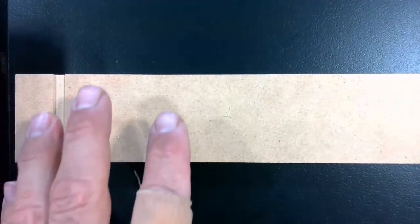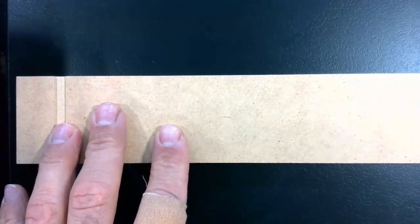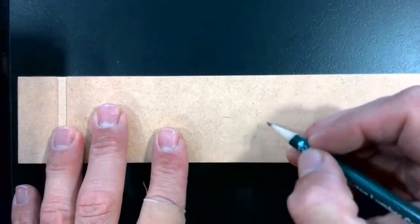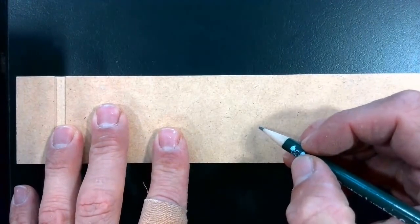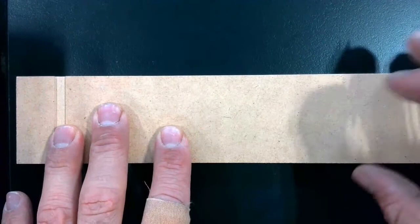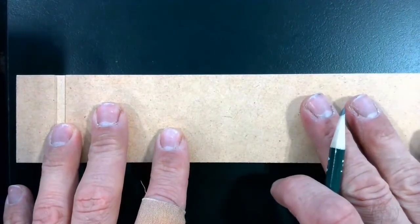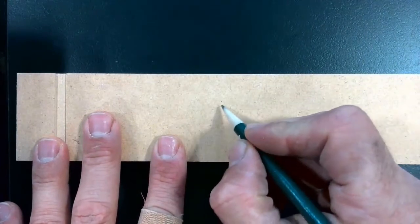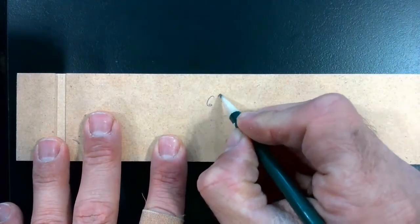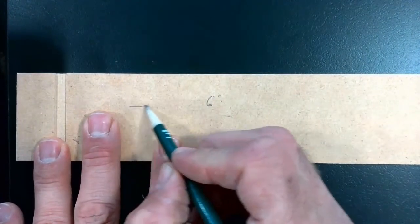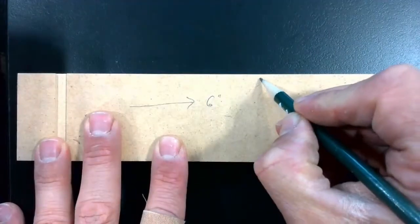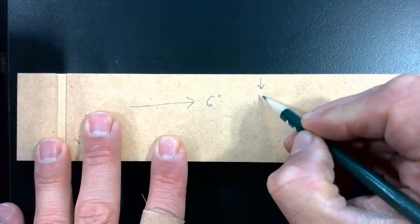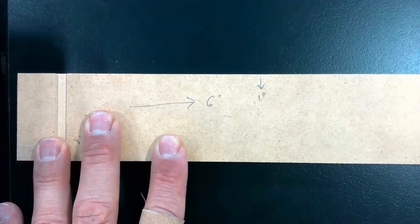Okay, let's take a look at how to properly lay out a marking to drill a hole on our workpiece. So I've got this sample workpiece here, and let's say I want to drill a hole that is six inches from this end, and one inch down from the edge.